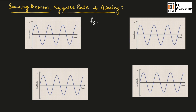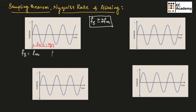We know sampling rate Fs should be greater than or equal to 2Fm. For example, if we consider a sinusoidal signal with frequency Fm equal to 1 Hertz, and we take Fs equal to Fm, then the sampling frequency will be equal to 1 Hertz. At 1 Hertz, we will get samples with values 0, 0, 0, 0 and 0. Using these samples, we cannot reconstruct the analog signal.